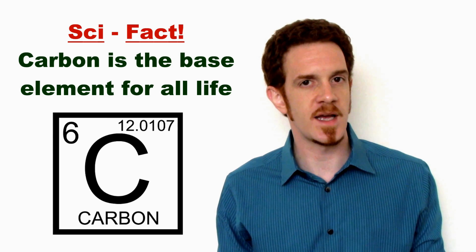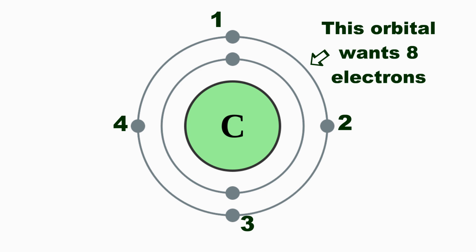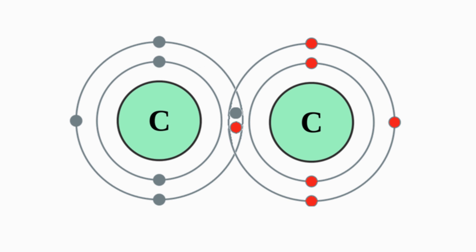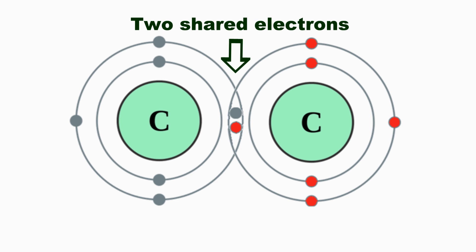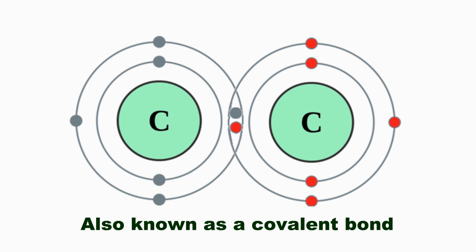Now carbon is a special element. An atom of carbon has four electrons in its outer electron orbital, and so an atom of carbon seeks four other electrons to share with other atoms.